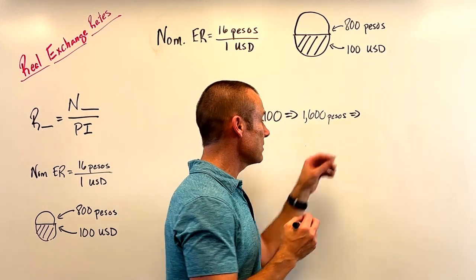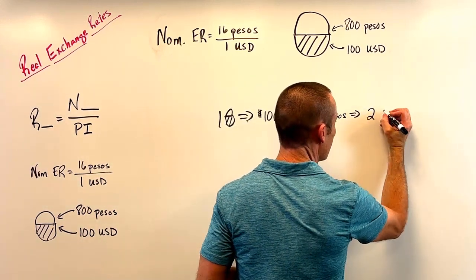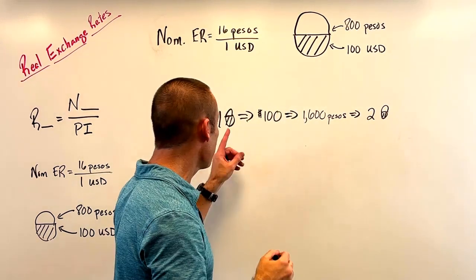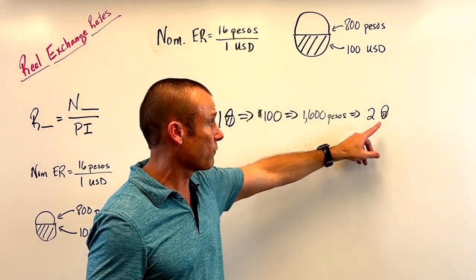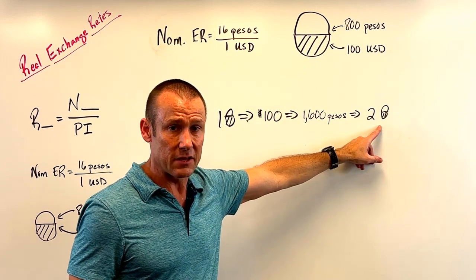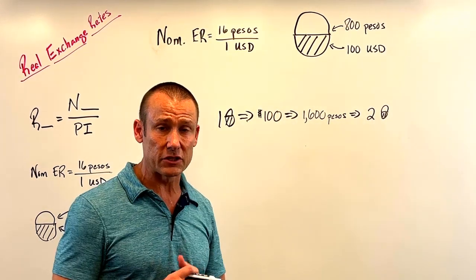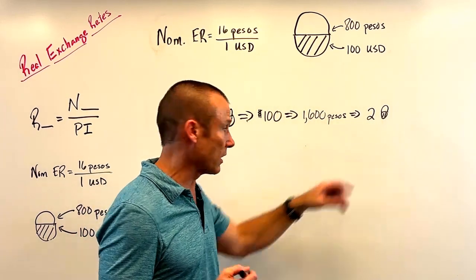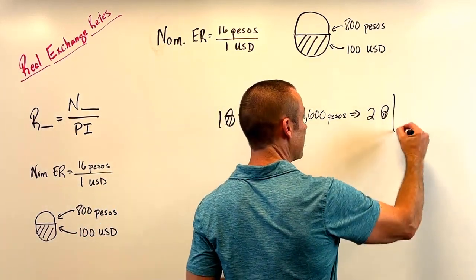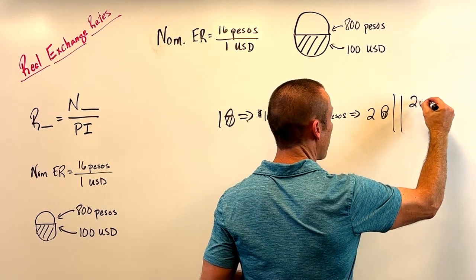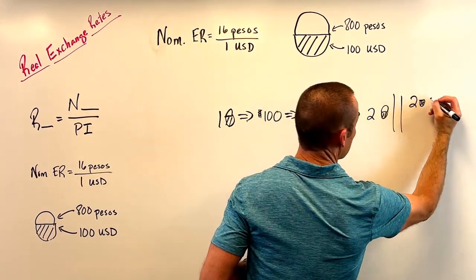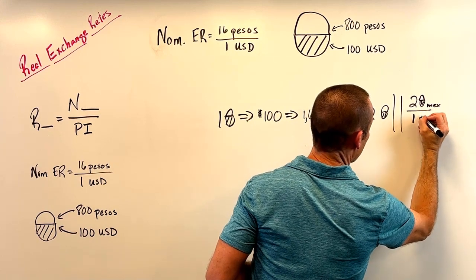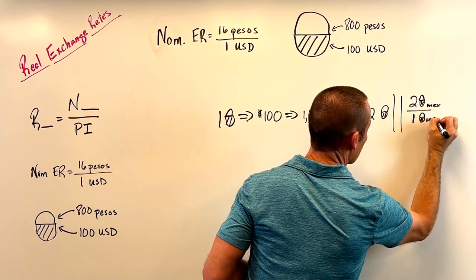Those 1,600 pesos are going to buy that market basket — which is selling for 800 pesos in Mexico. So 1,600 pesos can buy two market baskets. There you have it — the rate at which we're exchanging goods and services in one country for goods and services in the other. That is the real exchange rate: two.